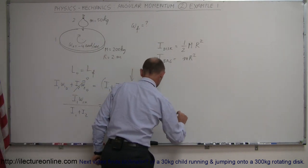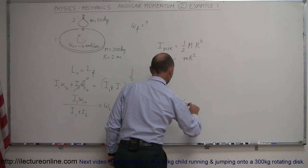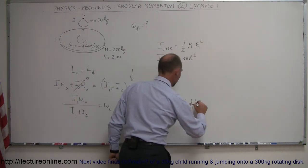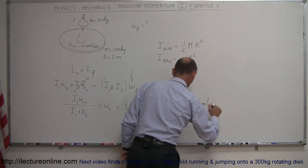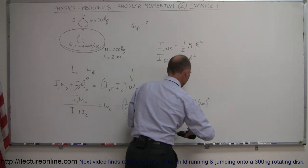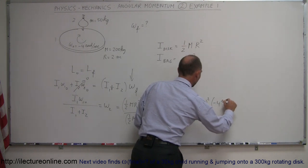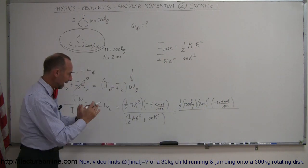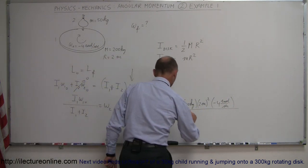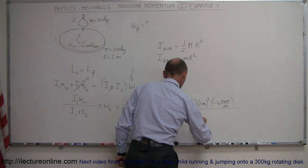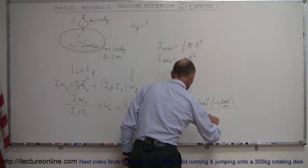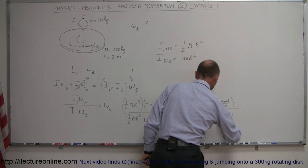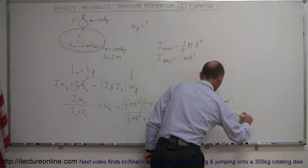So that would be one-half MR squared plus little mR squared. Remember, little m is the mass of the bag, big M is the mass of the disc. Plug in the numbers. One-half times 200 kilograms times the radius, 2 meters, we squared that, not plus, multiplied, times minus 4 radians per second. That's the numerator.